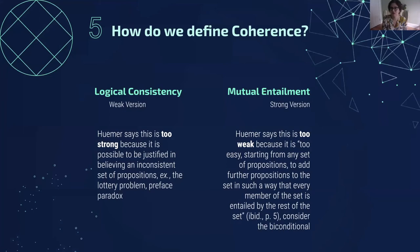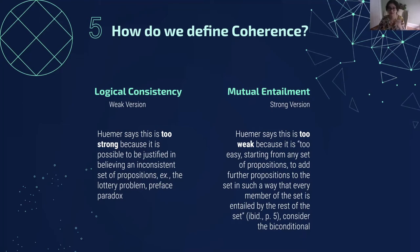So let's first talk about how to define coherence. Humer is going to find both of these definitions lacking, but maybe you can think of reasons to defend them. One definition of coherence is logical consistency — your beliefs are coherent if they're not logically inconsistent. Humer says this is too strong. Surprisingly, because this is supposed to be a weak definition of coherence, it's too strong because it is possible to be justified in believing an inconsistent set of propositions. For example, the lottery problem or the preface paradox. Both are intended to show how a person who rationally believes particular propositions might accidentally be irrational when you zoom out and look at their total belief set.